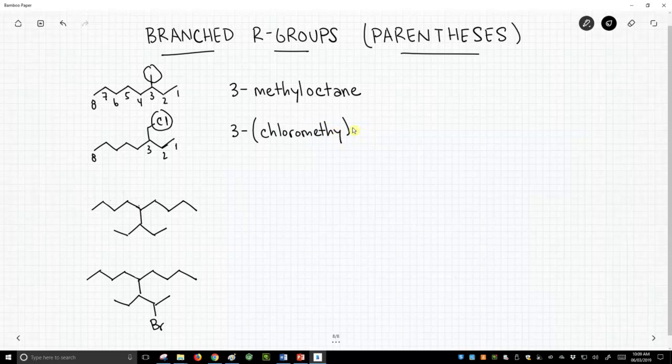So 3-chloromethyloctane. This octane has something in the three position. What's in the three position? Look to the very end of the parentheses. Our methyl group is in the three position, and look, there's something on our methyl group. It's a chloro. This is 3-chloromethyloctane.